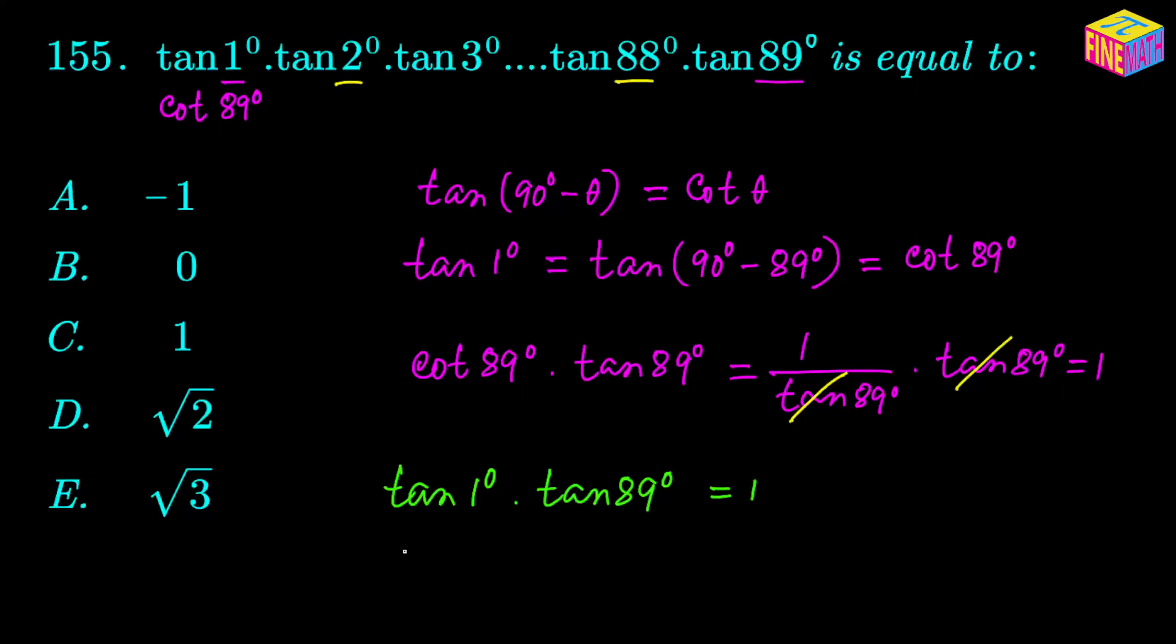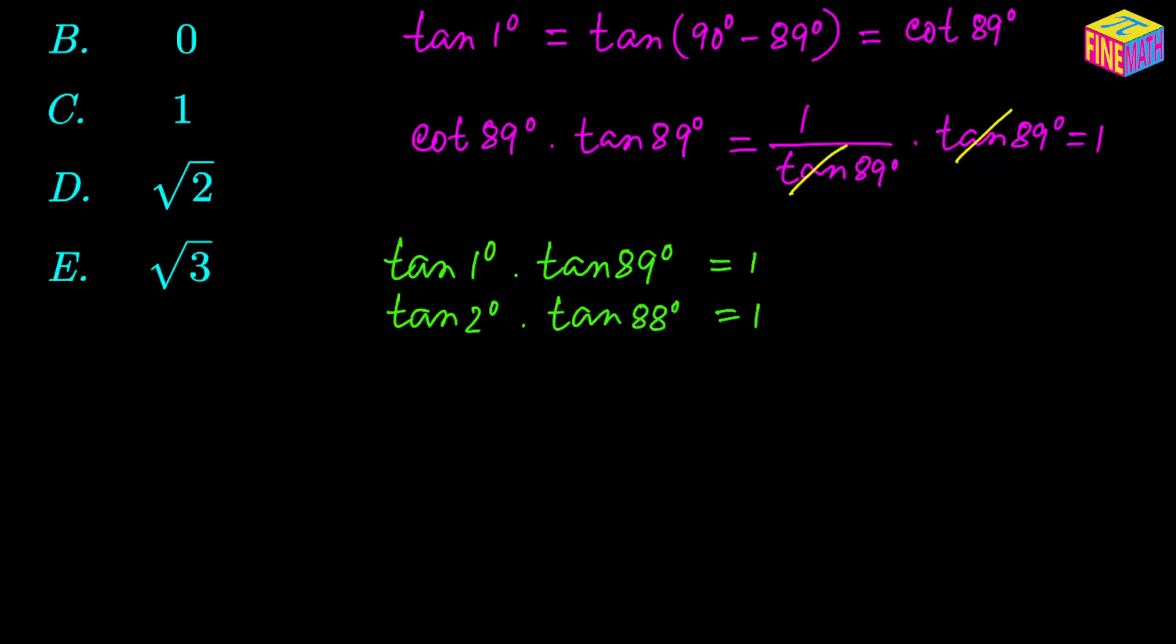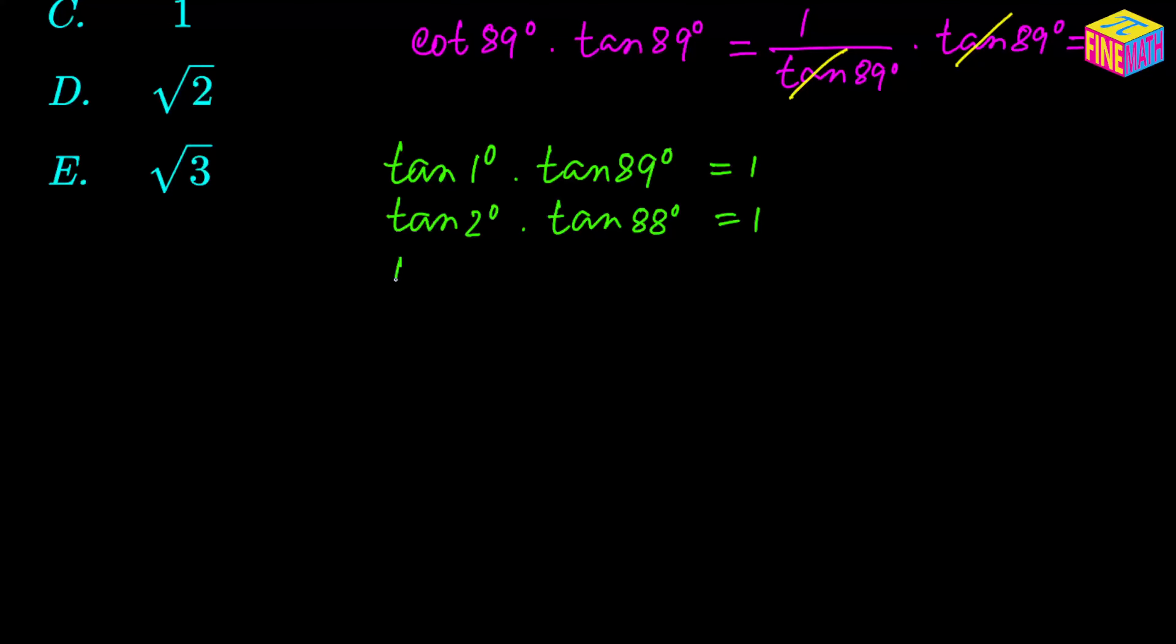This is equal to 1. Similarly, we can create another pair: tangent of 2 degrees times tangent of 88 degrees will also become 1. And if we keep doing this, tangent of 3 degrees times tangent of 87 degrees will also become 1.